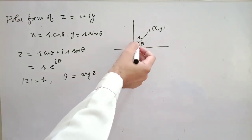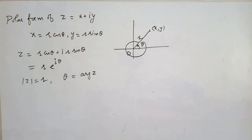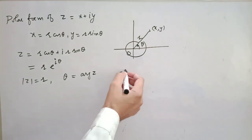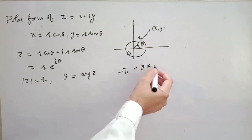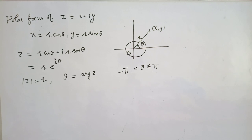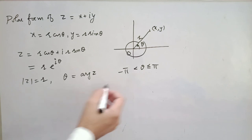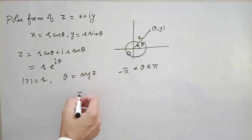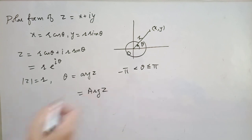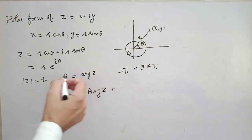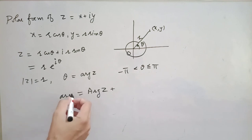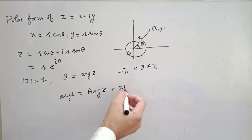The argument may have many values differing by a multiple of 2π. If we restrict the range of θ to (−π, π], then θ is unique for the given complex number — this is called the principal range. That unique value is called the principal value of the argument, denoted Arg(z), and it can differ from the general argument arg(z) by a multiple of 2π. Note that for z = 0, θ is not defined, and θ is measured in radians.